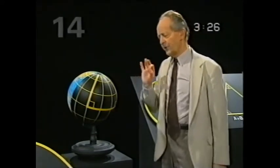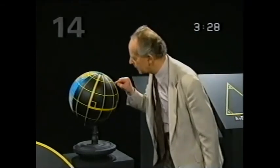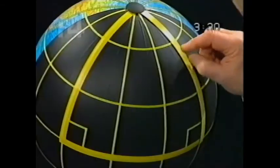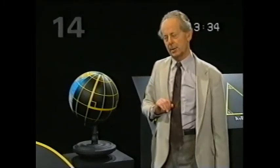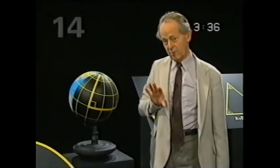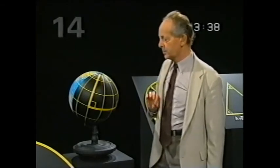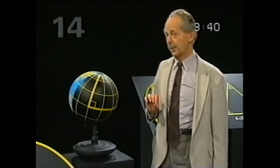If you have a very tiny triangle, an absolutely tiny little triangle such that it covers an area which is more or less flat, then the sum will come out to be roughly 180 degrees. But it will still, strictly speaking, be a little bit more.